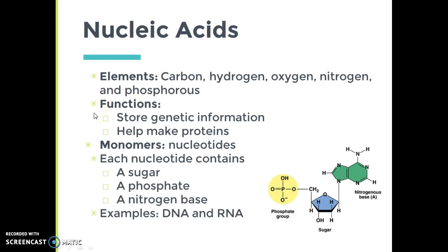Nucleic acids function in storing our genetic information — they make up our genetic instruction manual that tells our cells how to build proteins. The monomer or subunit of a nucleic acid is called a nucleotide, and each nucleotide is made up of a sugar, a phosphate, and a nitrogen base.